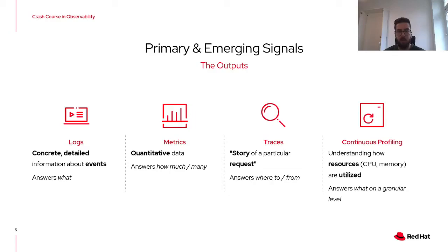While logs, metrics, and traces are often thought of as the primary signals well established within the observability landscape, there is a new emerging type of signal: continuous profiling. Continuous profiling helps us understand how resources such as CPU or memory are utilized, down to the level of individual sections of code, thus giving us detailed answers on what's going on in the system with regards to performance.